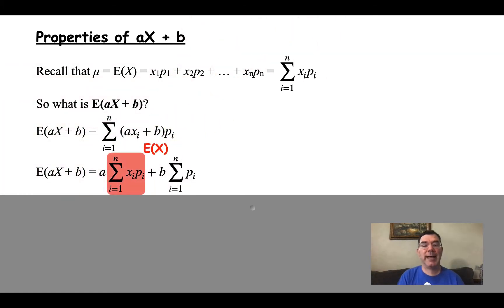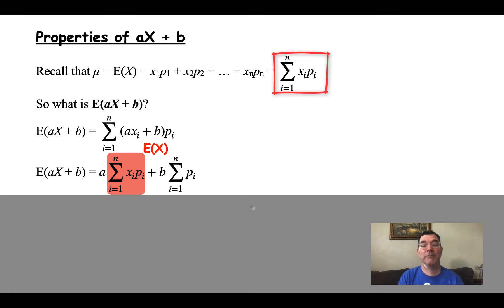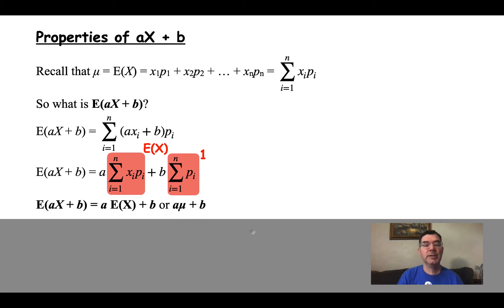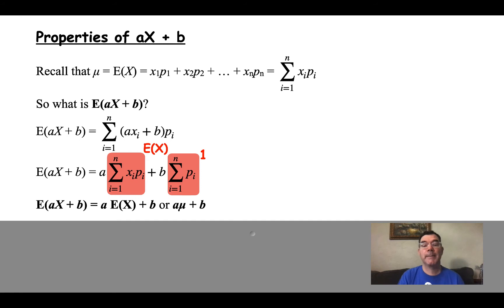If you look at the sum of the xi's and pi's, that's the exact same thing as E[x], the expected value of x. And if you look at the second sum, that's just the sum of the probabilities, and the sum of all possible probabilities is always going to be 1. So the expected value of ax plus b is going to be a times the expected value of x plus that constant b — or a times mu plus b, since mu represents the expected value of x.